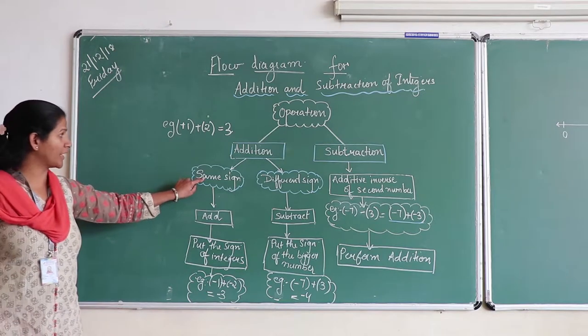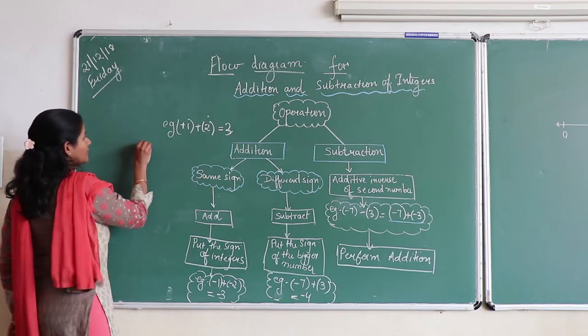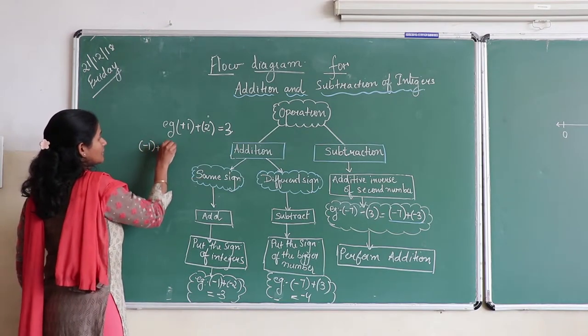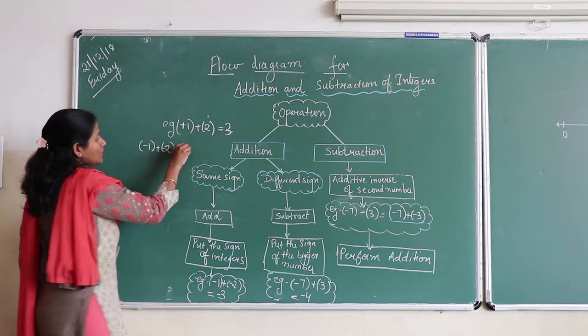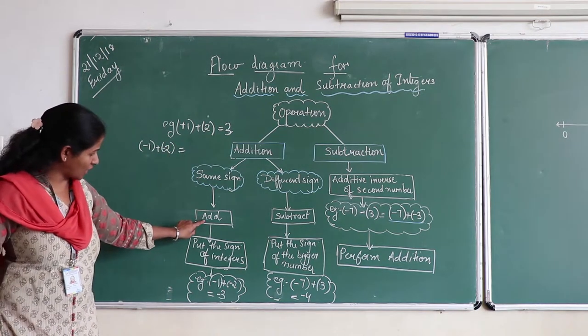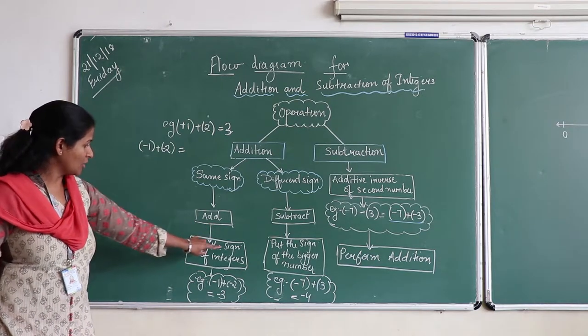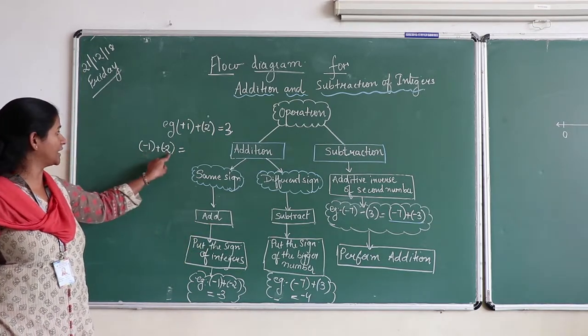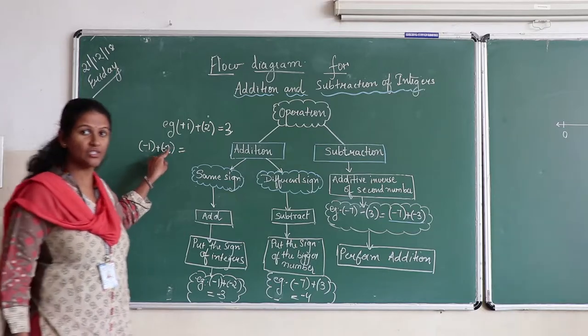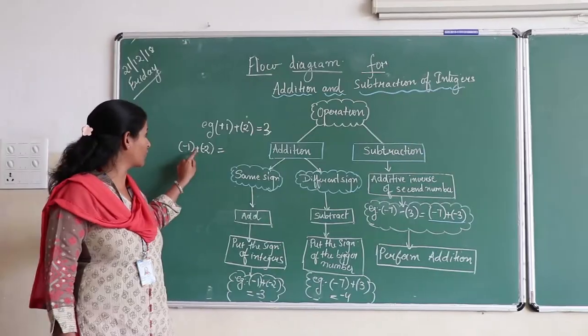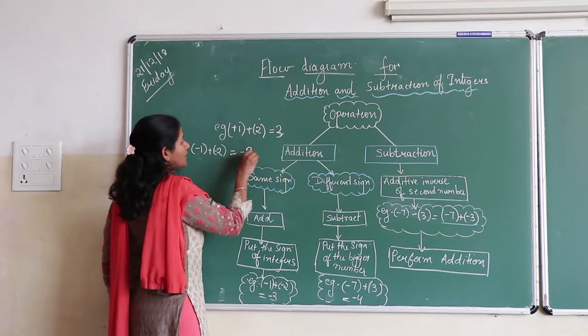But if it is two negative integers, again we follow this flowchart that it is same sign. We have to put the sign of the integers. So if it is two negative integers, we will put the sign of the negative integers which is minus 3.